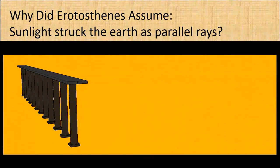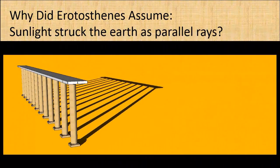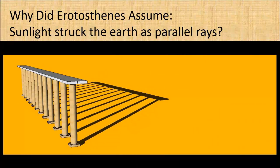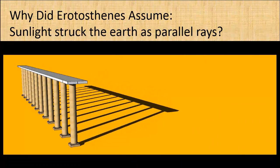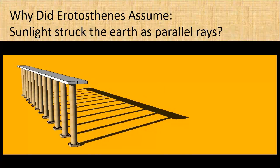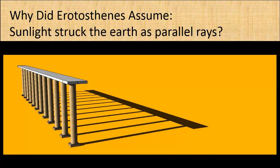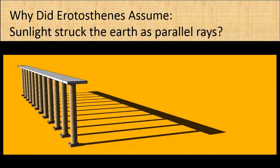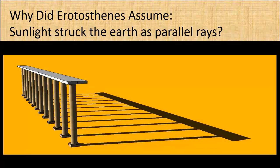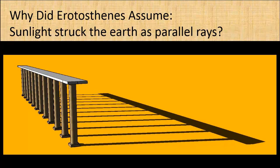Why did Eratosthenes assume sunlight struck the earth as parallel rays? Well, from vertical columns it was easy to observe how the shadows moved during the day, showing the sun's rays were parallel as they struck the earth. From Euclid he knew that if the sun and earth were very distant, the incoming rays would be so close to exactly parallel, he could ignore any small errors, greatly simplifying the problem.